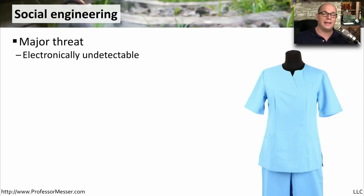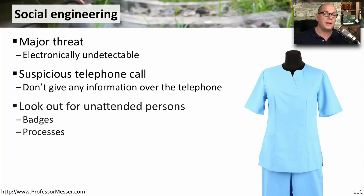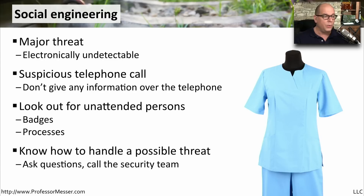One type of security attack that cannot be identified by any electronic means is called social engineering. This is when you are using people to try to get around security techniques. You might get a suspicious telephone call telling you that it's someone from the help desk, and they need assistance with correcting something inside of your computer and won't you just provide them with your username and password. Or it may be somebody who's walking around your place of business without a badge, not following the correct processes, and trying to gain access to your computing systems. You should always know how to handle one of these possible threats — make sure you know how to ask questions, and if you think there might be a problem, make sure you know who to contact on your security team.